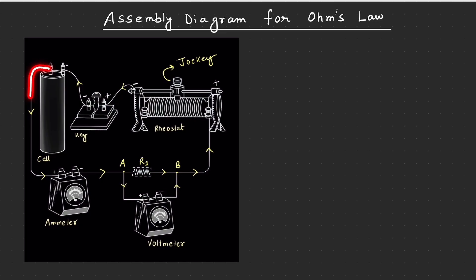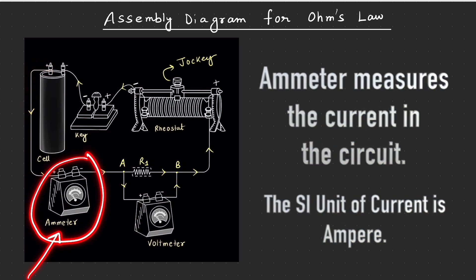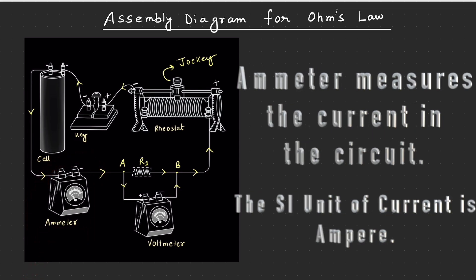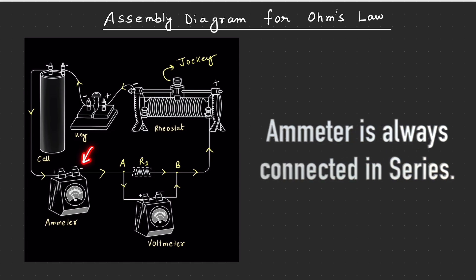Positive terminal of the battery se current ja raha hai and the entire current is made to pass through an instrument which is called the ammeter. So ammeter ek aisa instrument hai, joh measure karta hai ki how much current is flowing through the circuit. Yehi cheeze measure karega ammeter, the name of the instrument aur unit of current is ampere. So ammeter ka positive terminal se current enter kar raha hai, current ko leave bhi kar raha hai through the negative terminal.